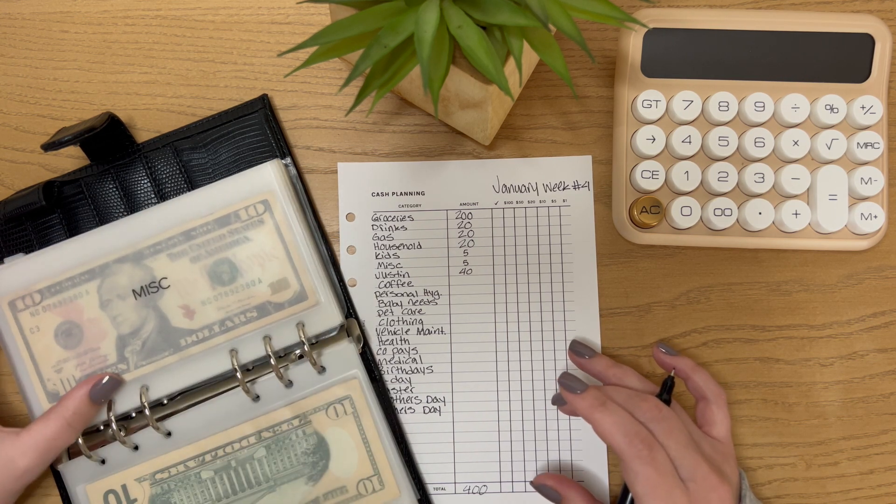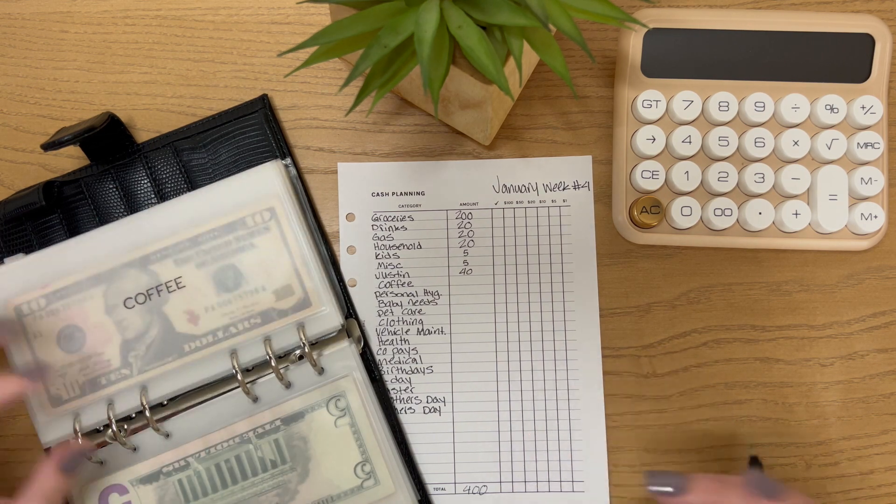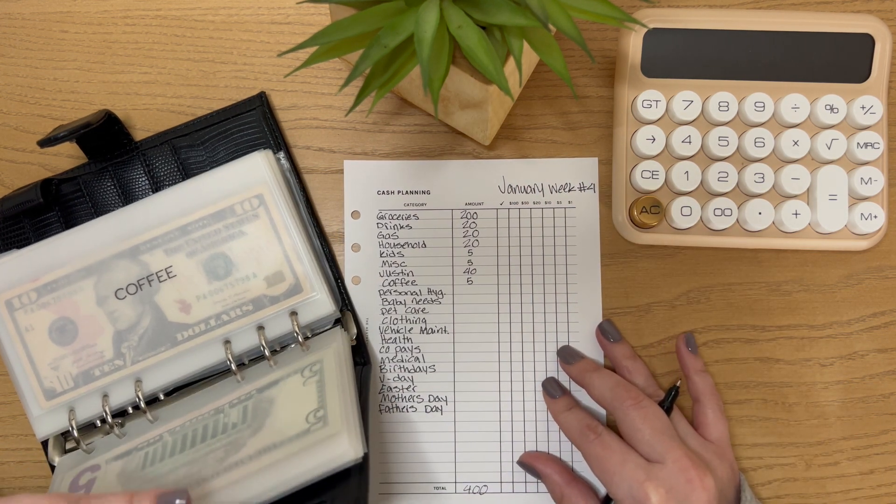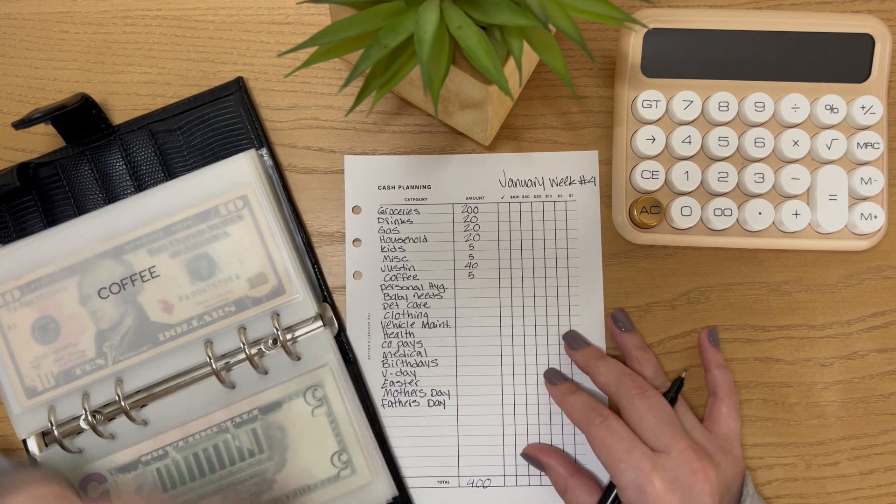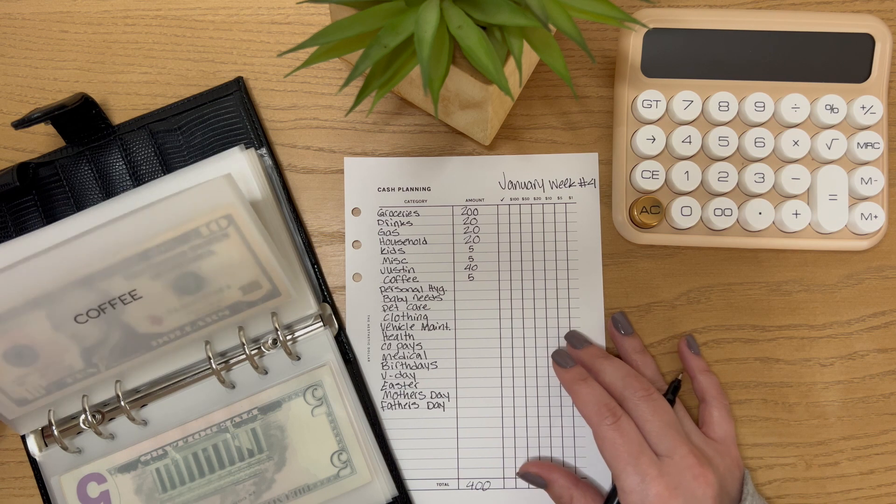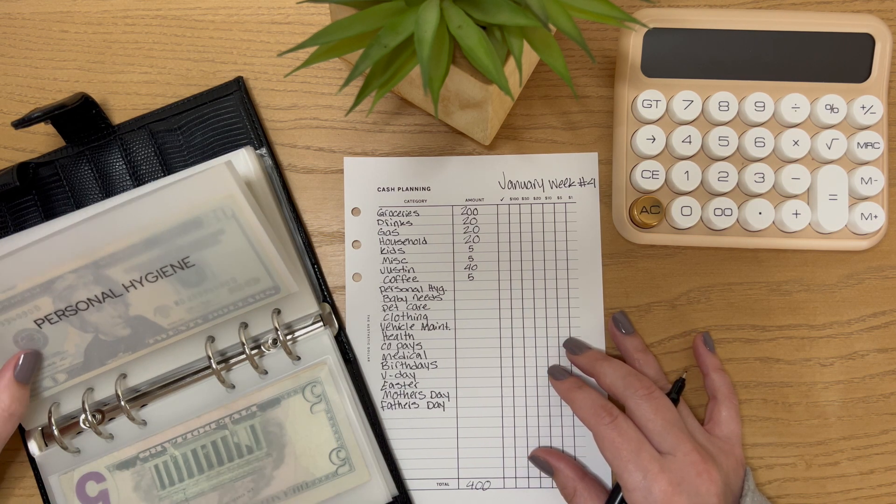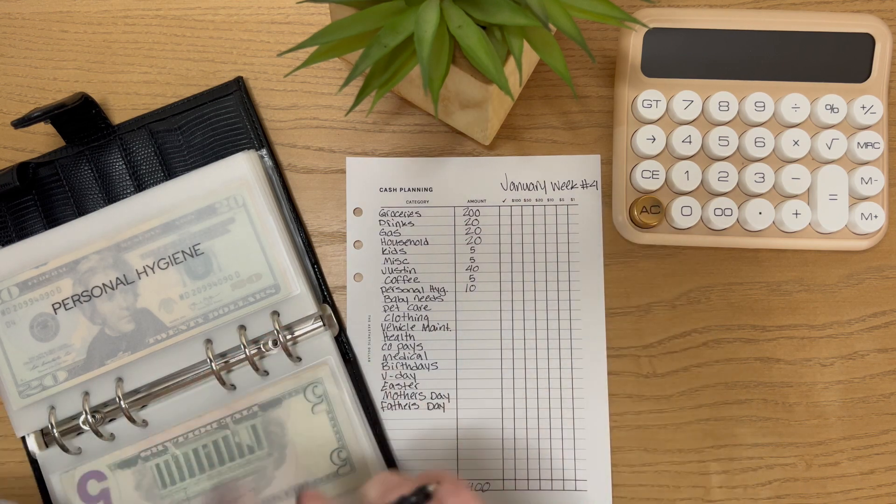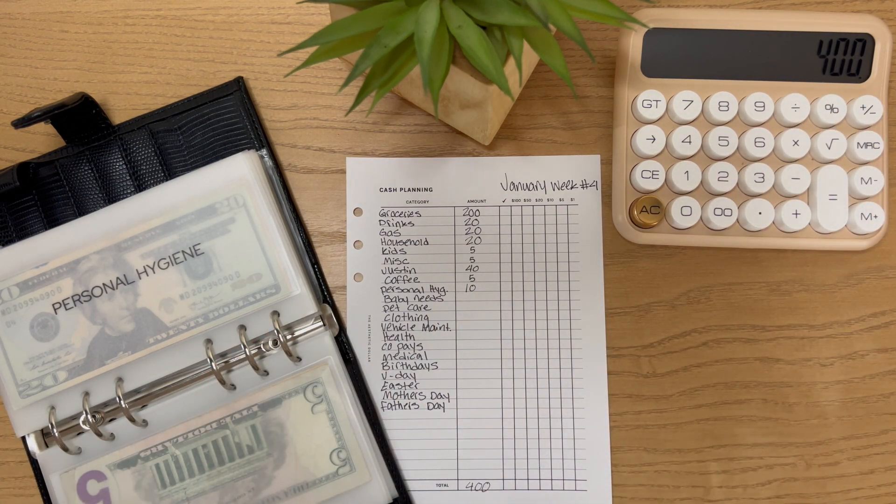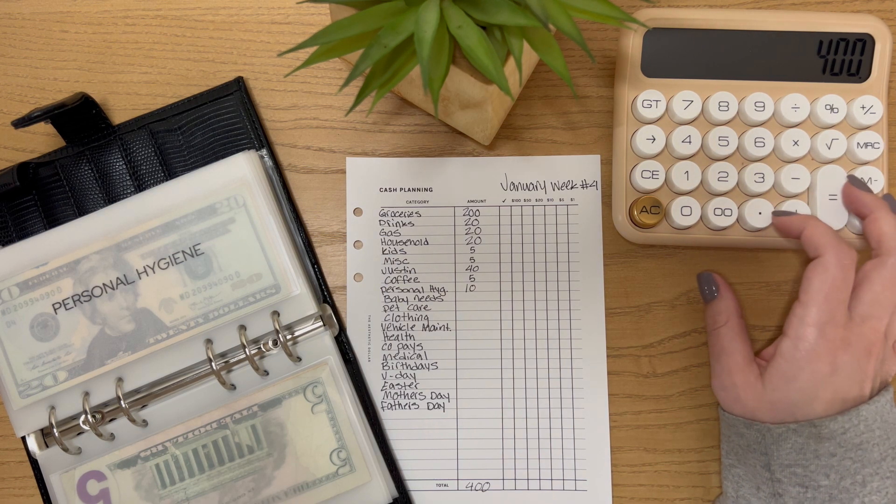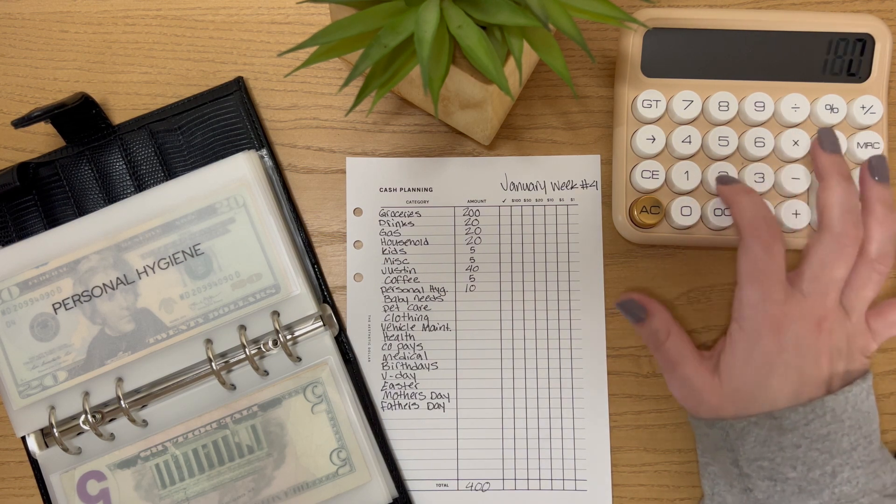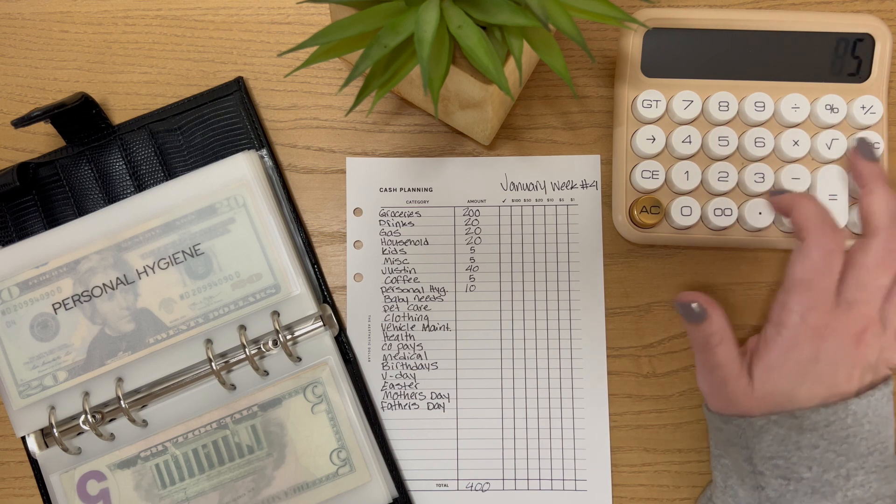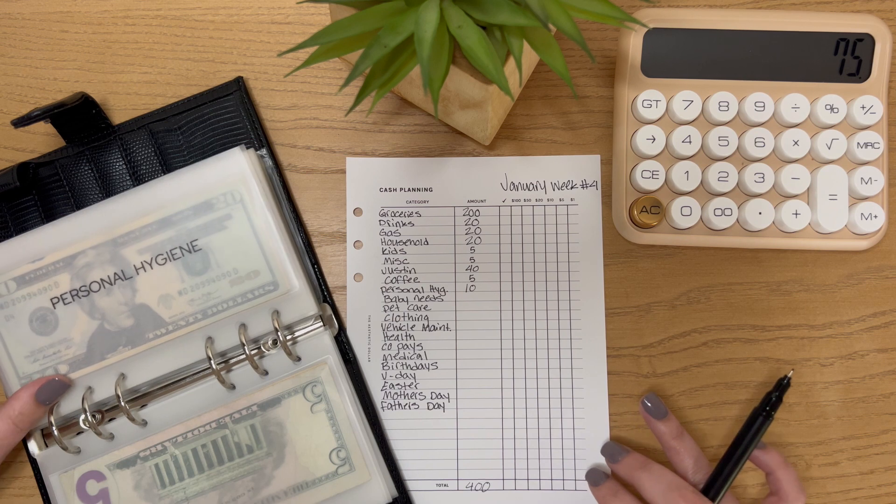Kids have like 50 bucks in here, so they're good. Coffee, I'm going to do five. This week is a little bit lower than normal. That's okay. I'm just going to try to cram as much as I can and spread it out as much as I can with the $400 that we have this week. Personal hygiene, I need to do, let's see, I'm going to put 10. Let me turn this on. That's what I normally do too. I'm so thrown off. I usually don't film this, so I'm sorry. 200 minus 20, 20, 20, 5, 5, 40 by 10. So I'm left with $75 after that.